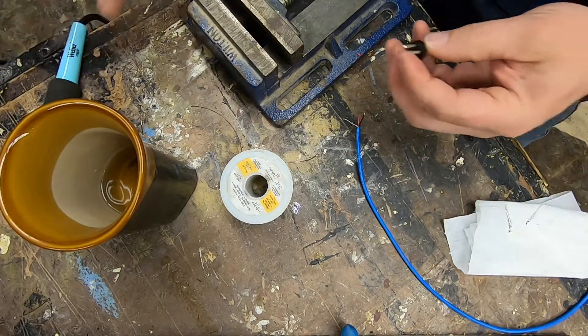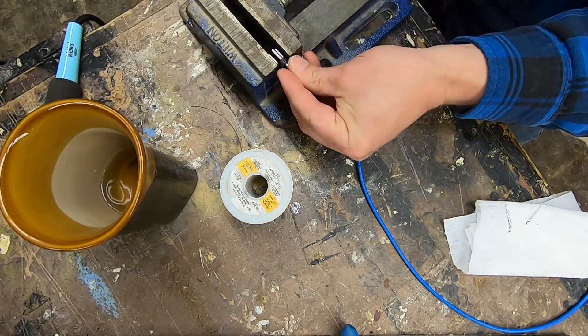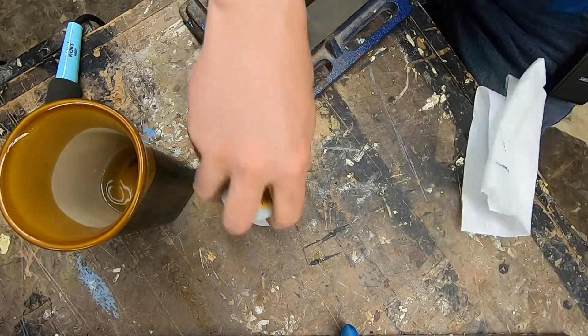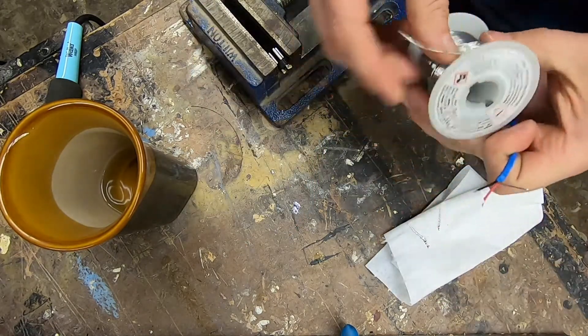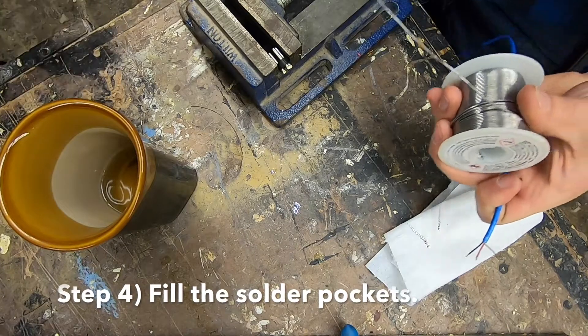In today's demonstration, I'm using the Neutrik NC series XLRs. So now with the wires tinned, I'm going to put solder in the solder pockets.